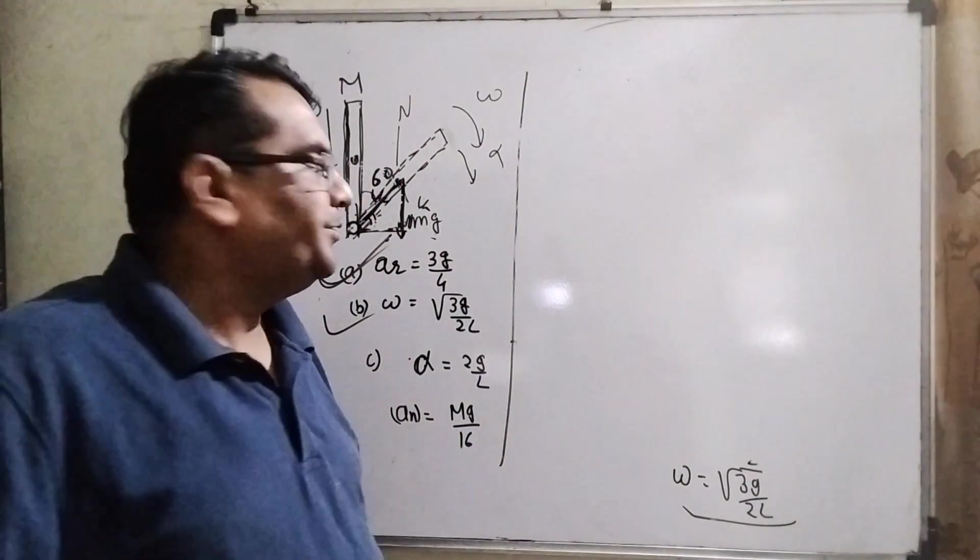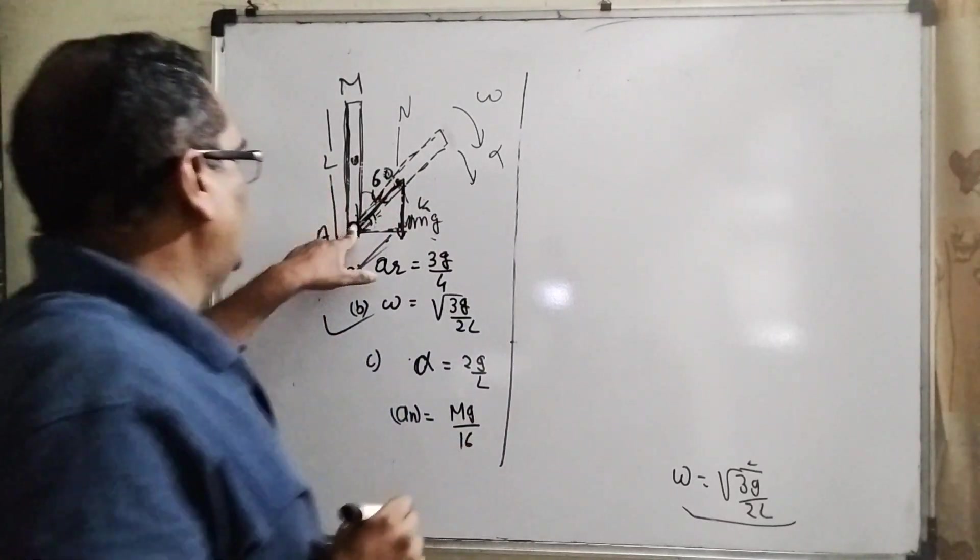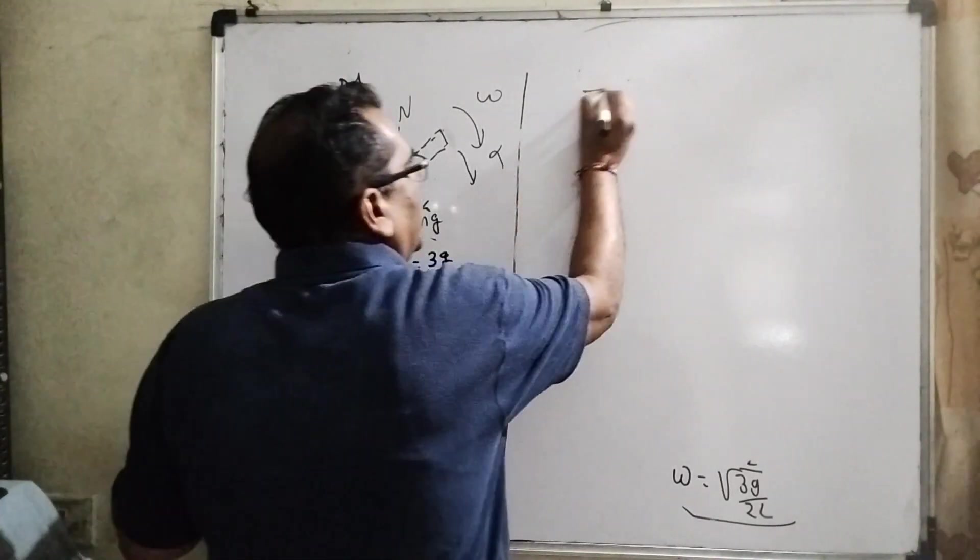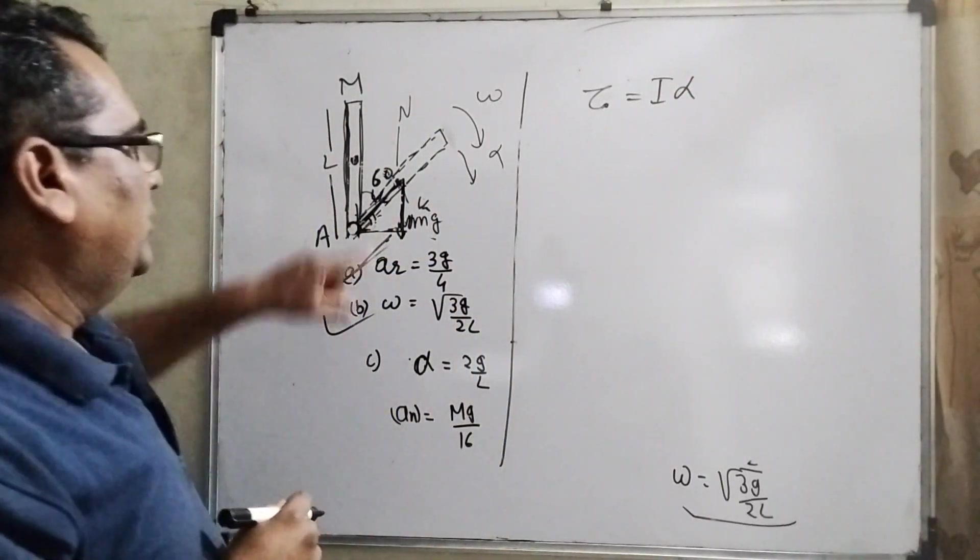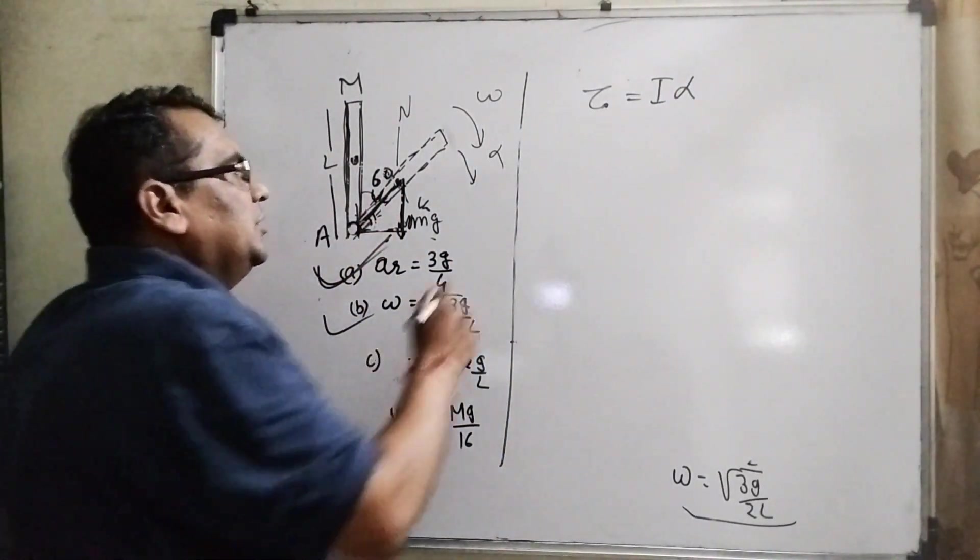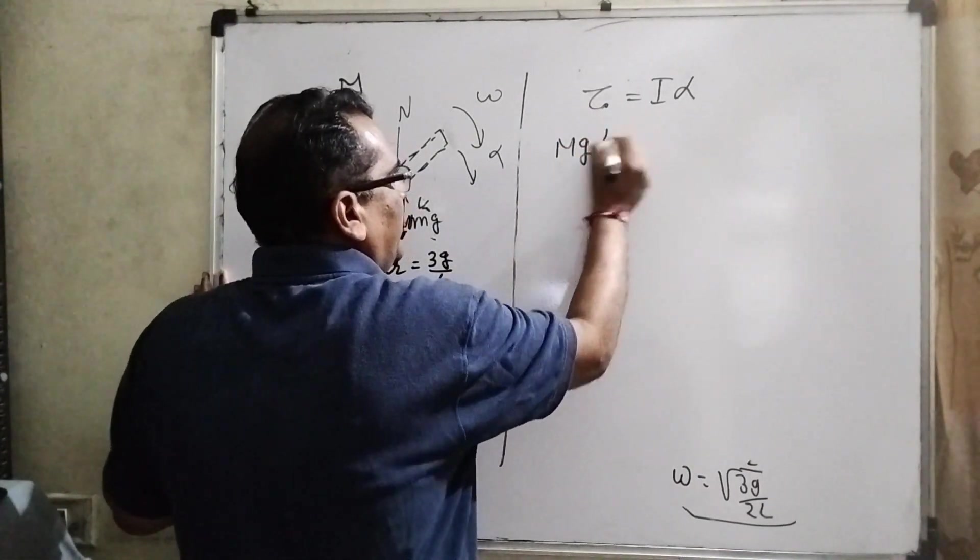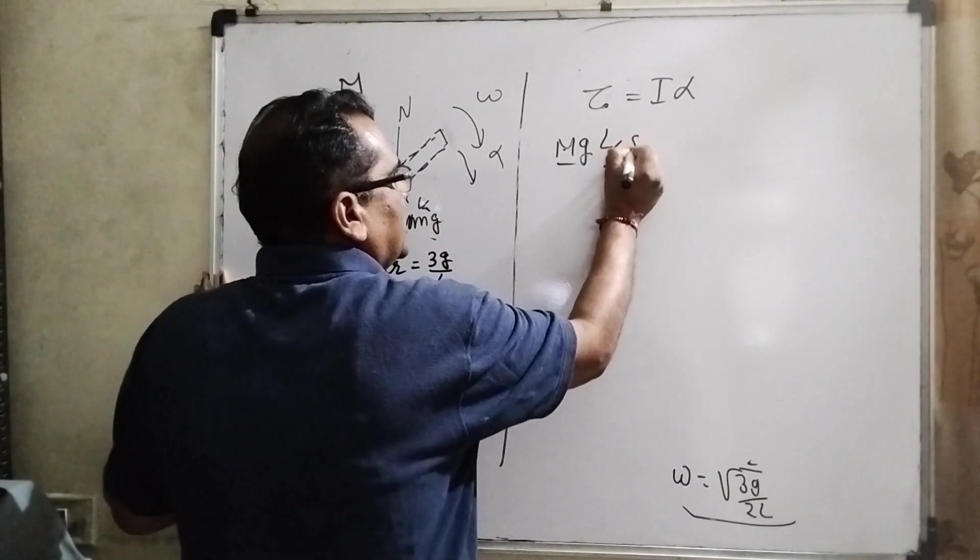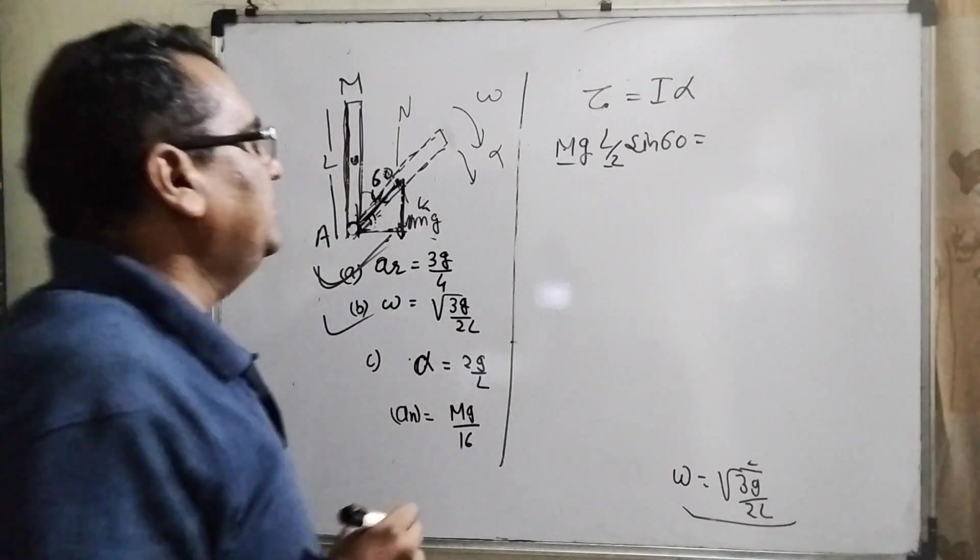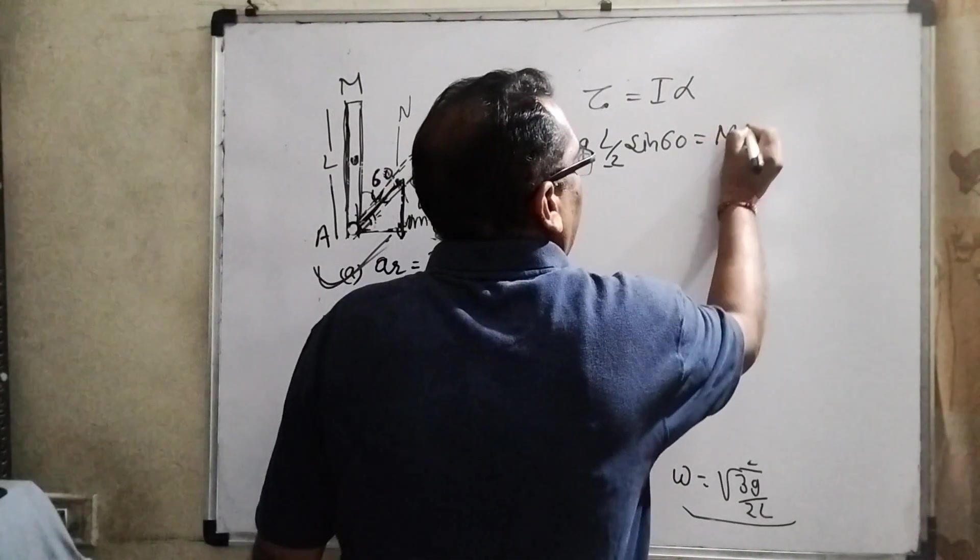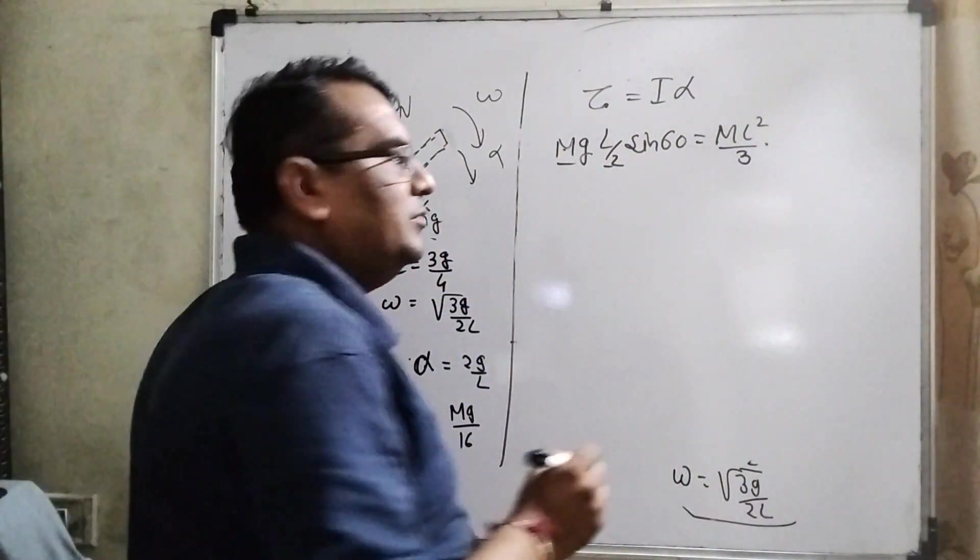Now, for finding out alpha, we can use the formula of tau around A. Then tau equal to I into alpha. Here the tau, making the angle with 60 degrees. So here M g is the force and the distance is L by 2, making angle 60 degrees, means sin 60.